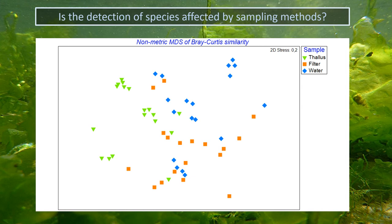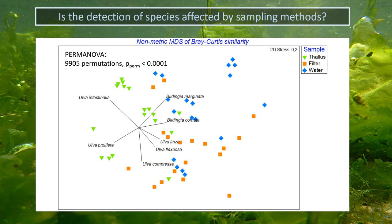We also observed that the sampling method affects the relative abundance of reads representing different species. This is apparent in the MDS plot, which illustrates that Bray-Curtis similarities tended to differ between tissue, filter, and water samples, represented here by green, orange, and blue symbols. Permanova confirmed that this difference was statistically significant. Looking at loading vectors of the different species, Blidingia species tended to be particularly abundant in water samples (blue), while Ulva intestinalis and Ulva prolifera tended to be particularly abundant in tissue samples (green), and most other species tended to be most abundant in filter samples.